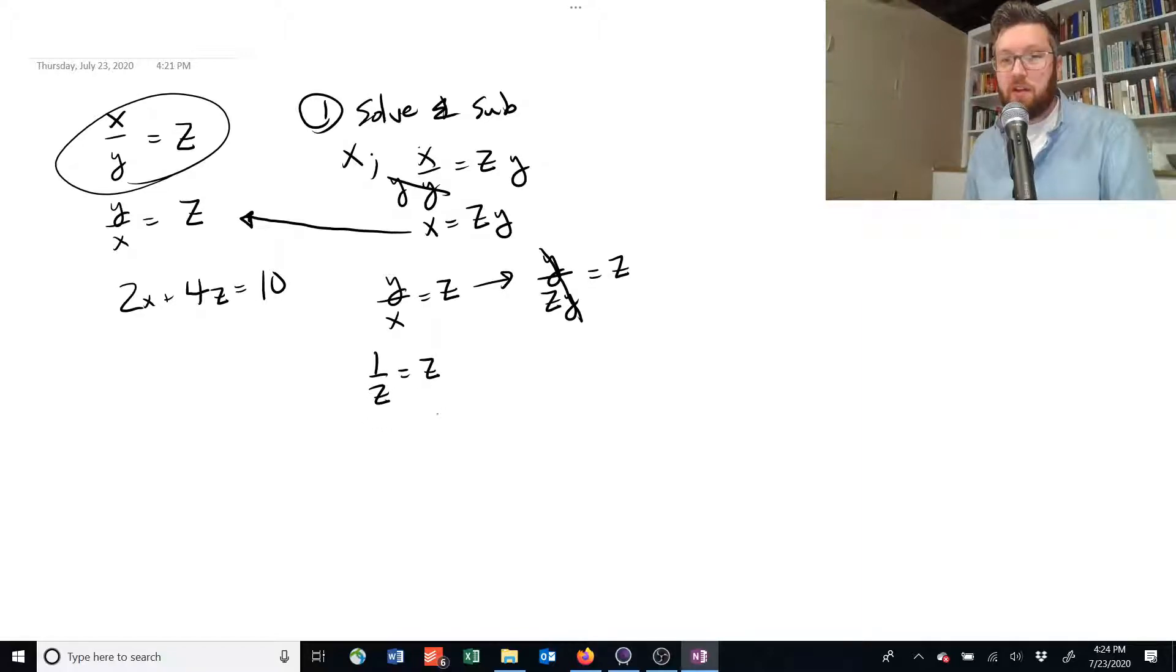We're now already down to one equation and one unknown, so we should be able to find what z is equal to. So if I multiply both sides by z, like I did here, I get these z's cancel, and I have z squared equals 1. And I need to get rid of that exponent, and I can do that by taking the square root, which is taking both sides to the power of 1 half. 1 to the 1 half power is still 1, because 1 times 1 is equal to 1, and I get that z is equal to 1.